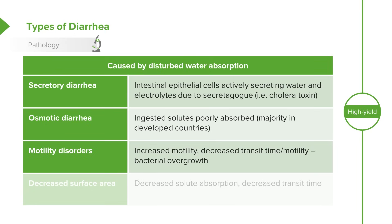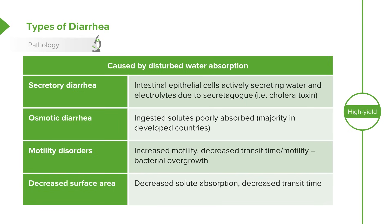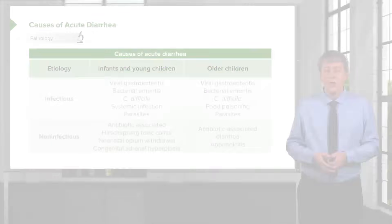Motility disorders can occasionally occur, decreasing transit time, generally through bacterial overgrowth, though this is not too common. Lastly, especially in children with things like short gut syndrome, patients may have decreased surface area and thus an inability to absorb material, creating what is effectively an osmotic diarrhea. Short gut syndrome is really common in some of our NICU graduates, especially those who have made it through surgical necrotizing enterocolitis.